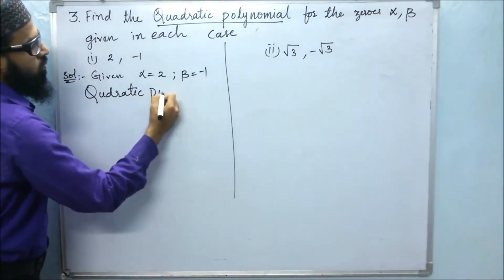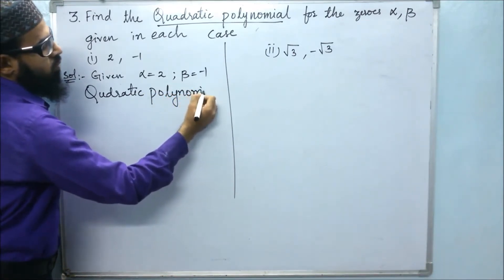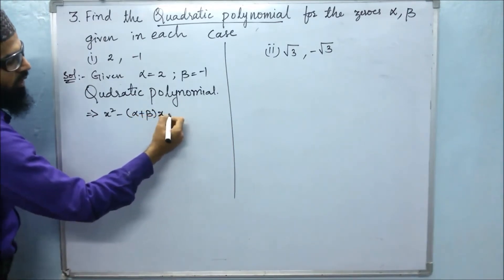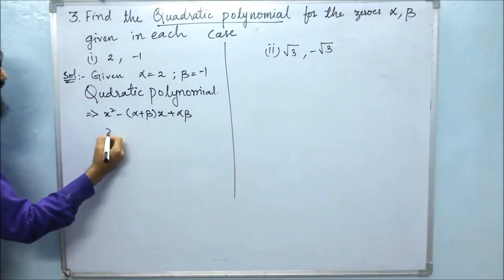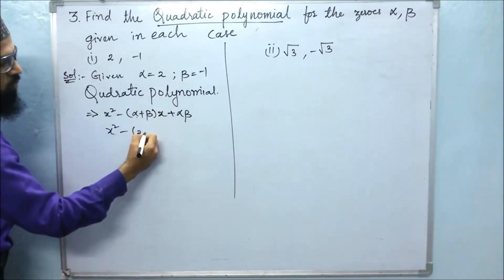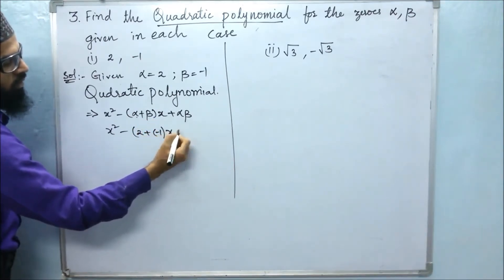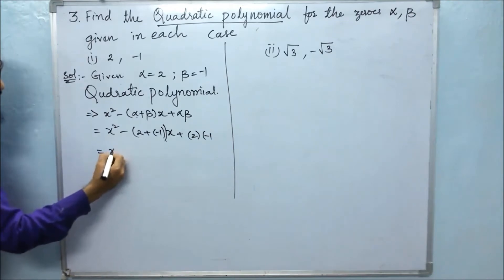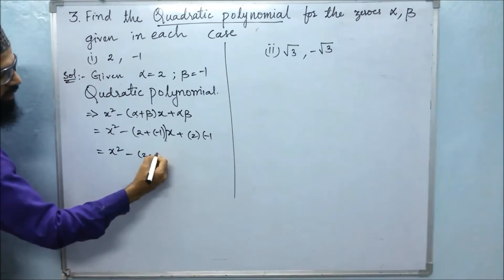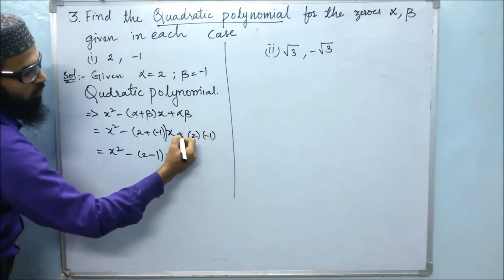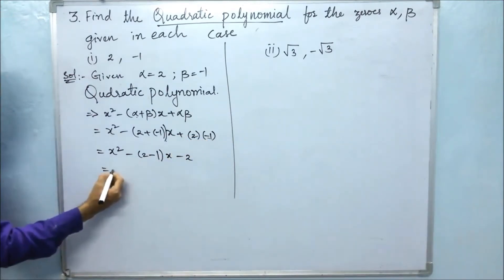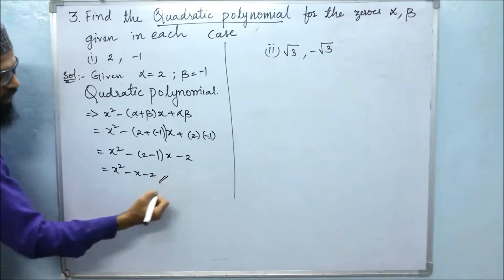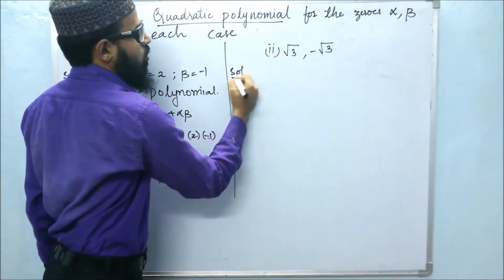We know the quadratic polynomial formula is: x squared minus (alpha plus beta) into x plus alpha beta. So here: x squared minus (2 plus minus 1) x plus (2 into minus 1). That gives x squared minus 1 into x minus 2, so x squared minus x minus 2. This is the required polynomial.